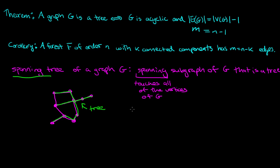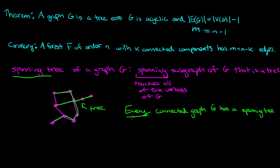We can always say that any graph, as long as it's connected, has a spanning tree. Really, every connected graph G has a spanning tree. If G is a tree, we are already done because it is itself a spanning subgraph of itself and it's already a tree.